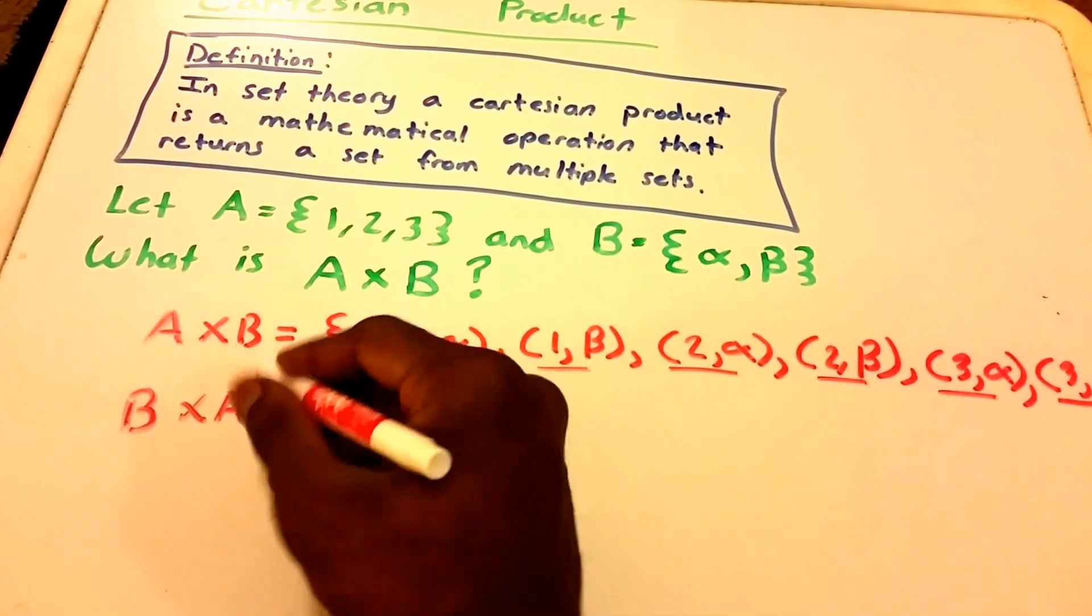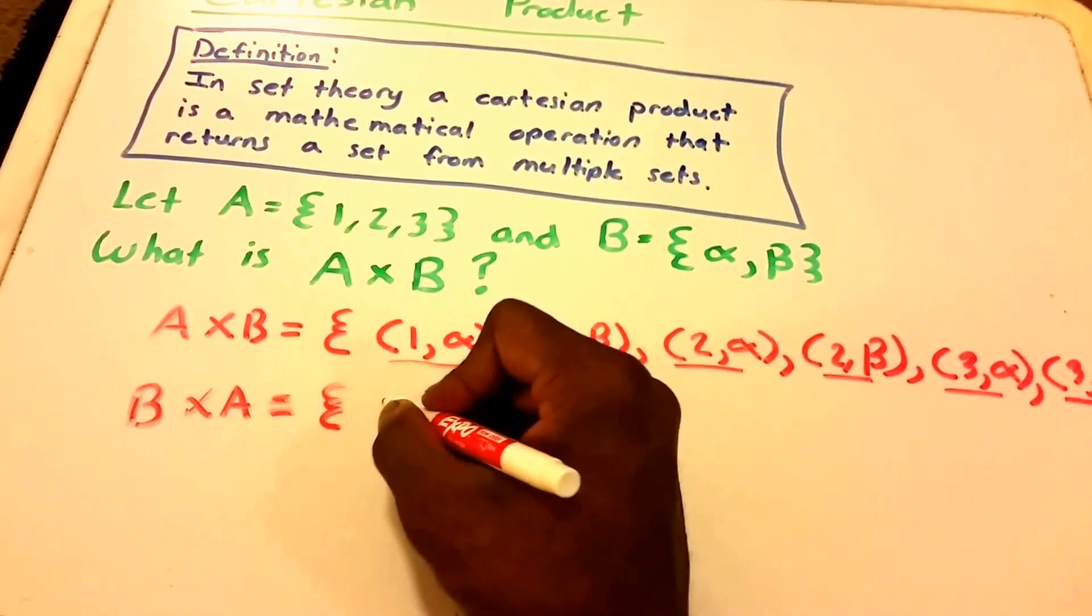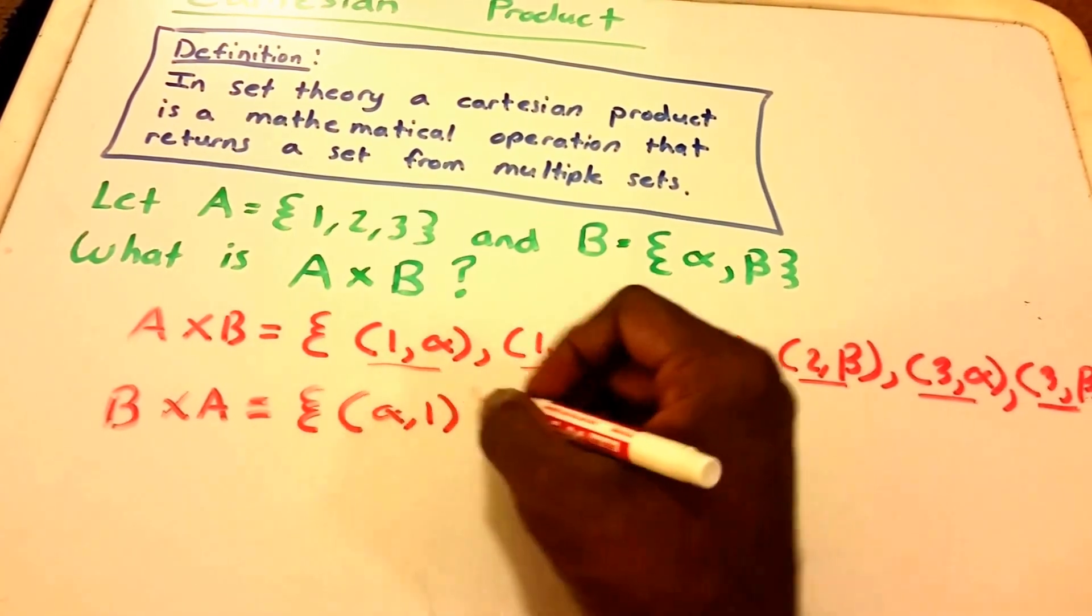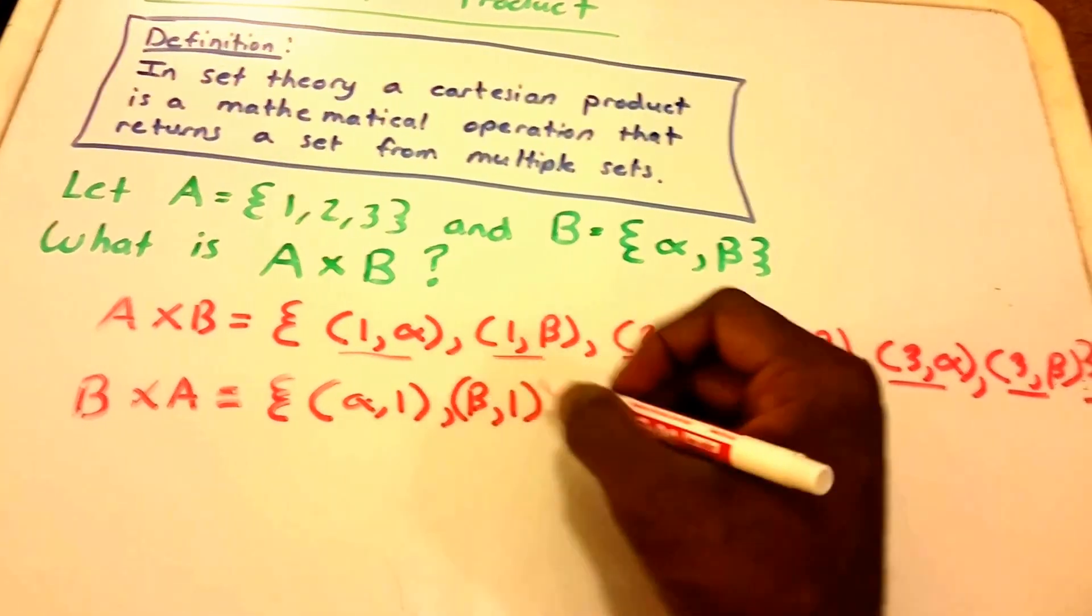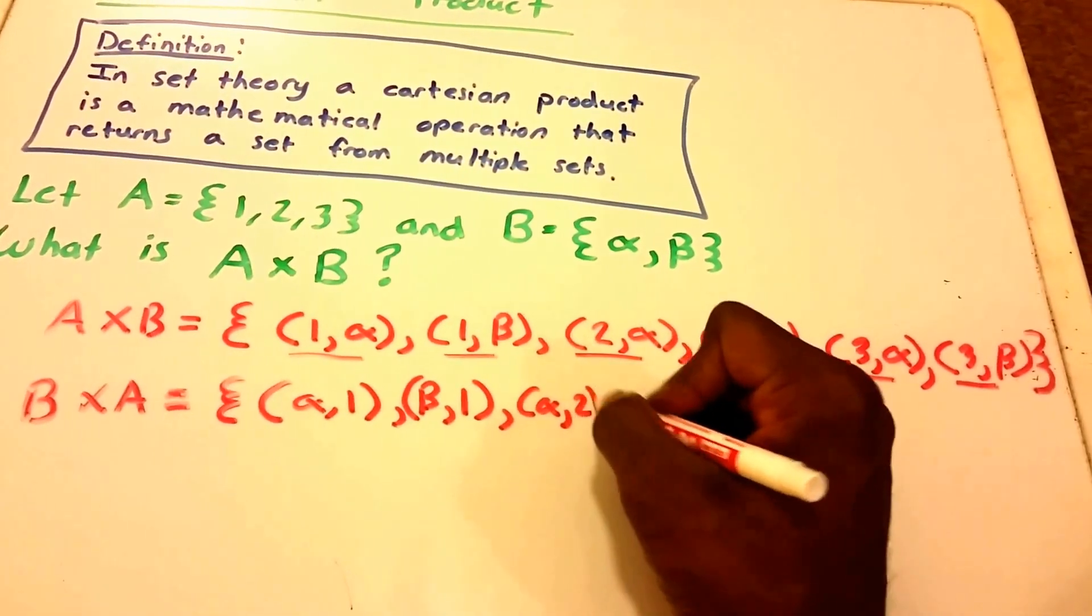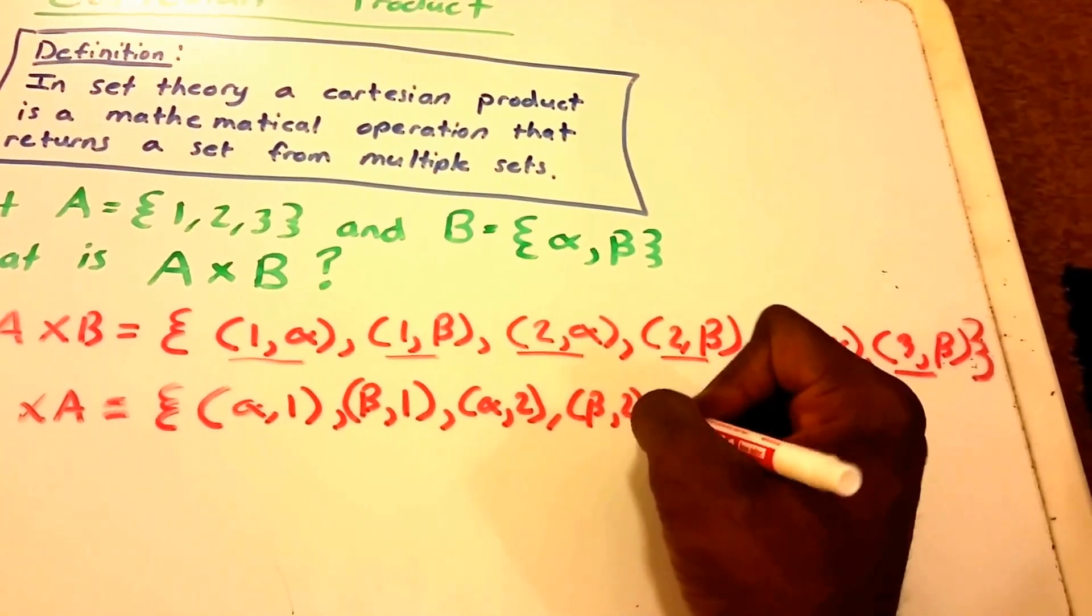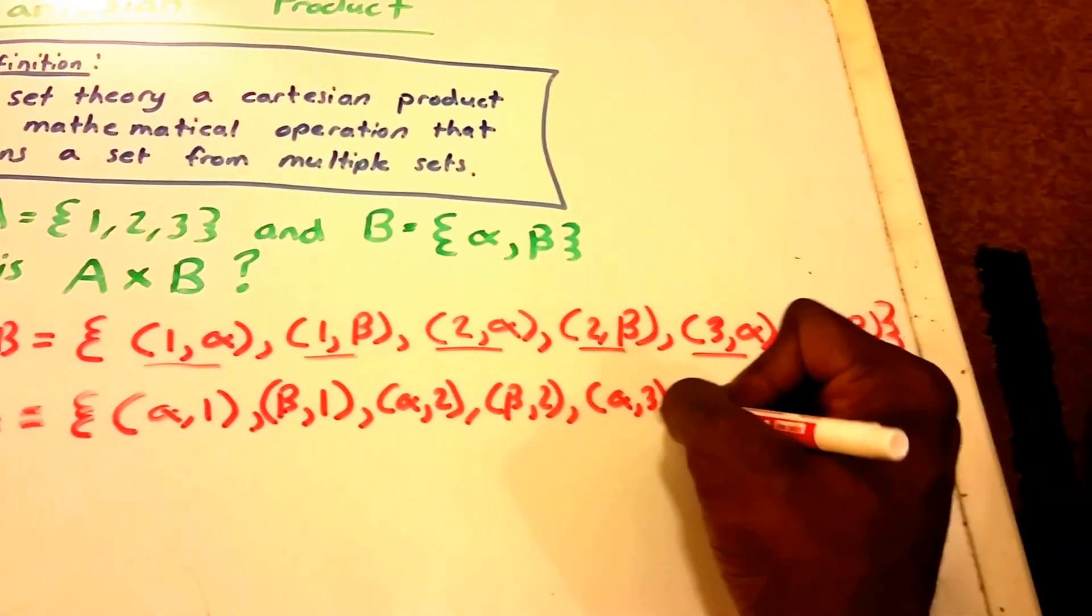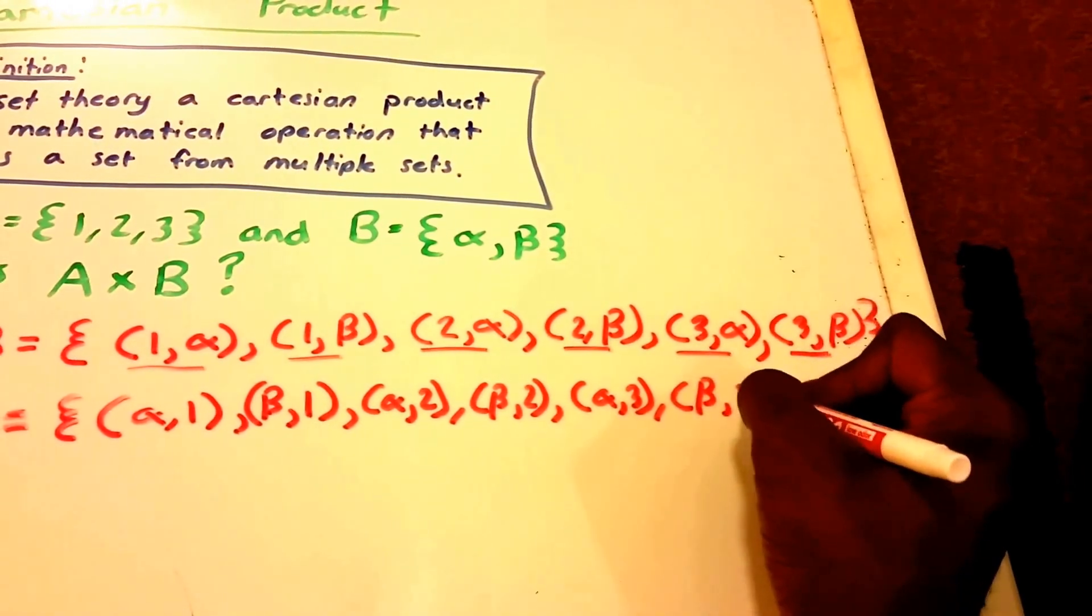So the Cartesian product of B and A is equal to (alpha, 1), (beta, 1), and then (alpha, 2), and (beta, 2), and then (alpha, 3), and (beta, 3).